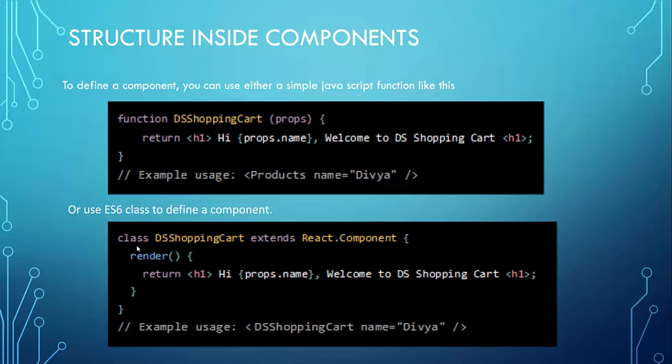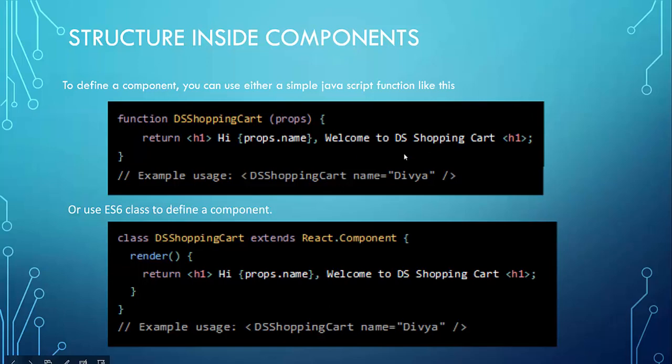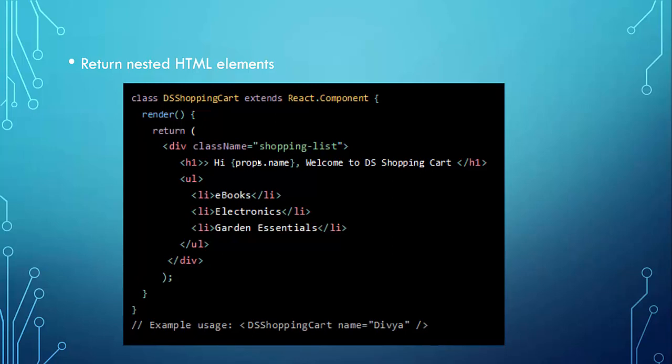Or you can use an ECMAScript 6 class-type representation for your component. In the class definition, you have a class name that extends the React.Component class, and then a render method. Inside the render method, you have a return statement that returns an HTML element. In both implementations, the usage is similar — we use DS shopping cart as the element name and pass the name as props. If you want to return nested elements, you can nest the desired HTML elements inside a single unified div element.